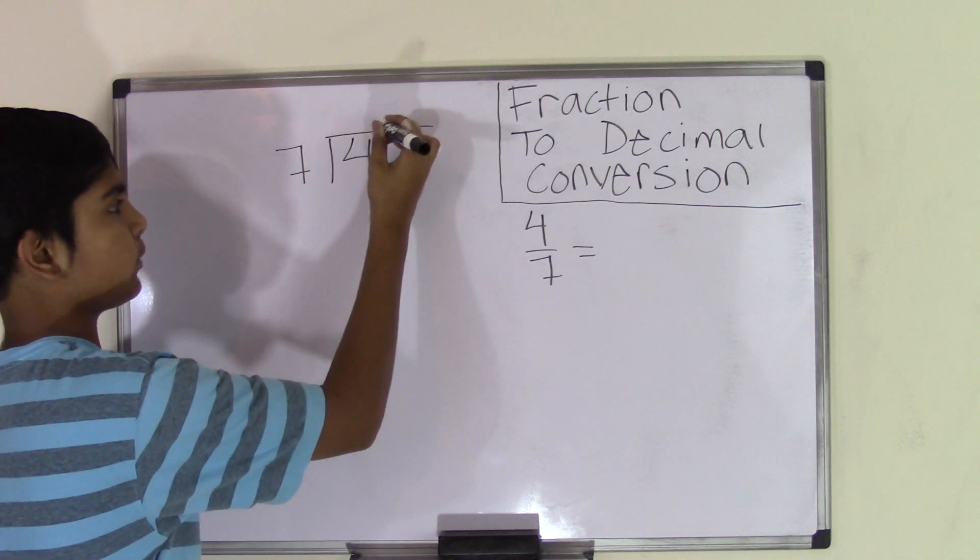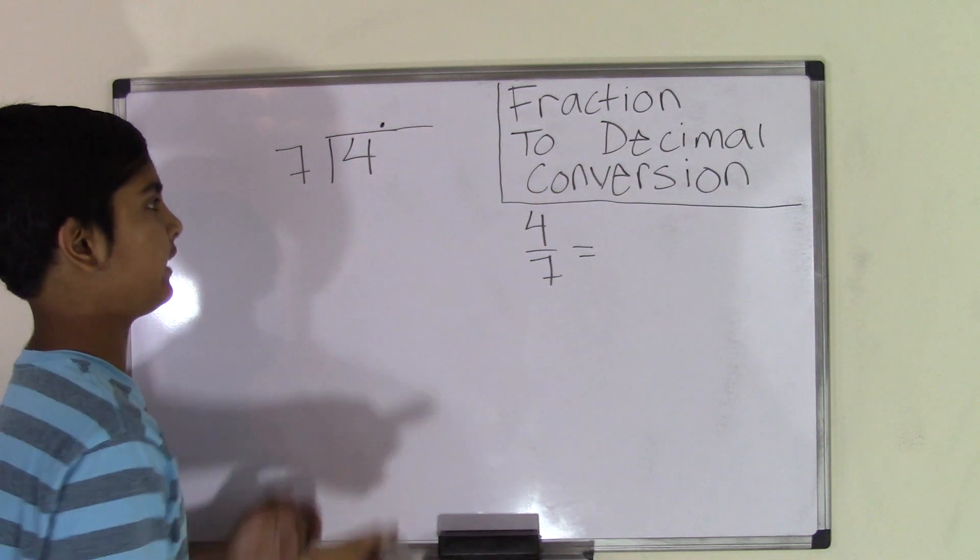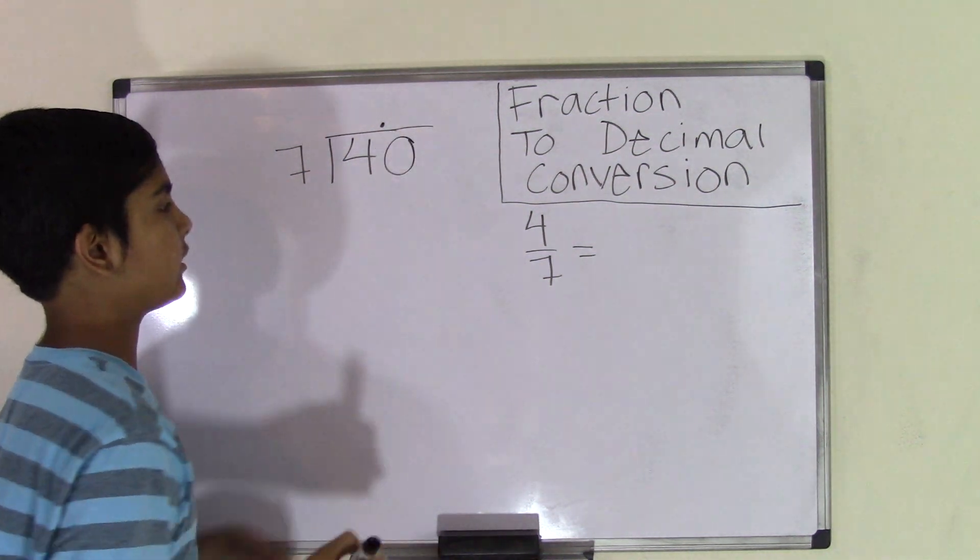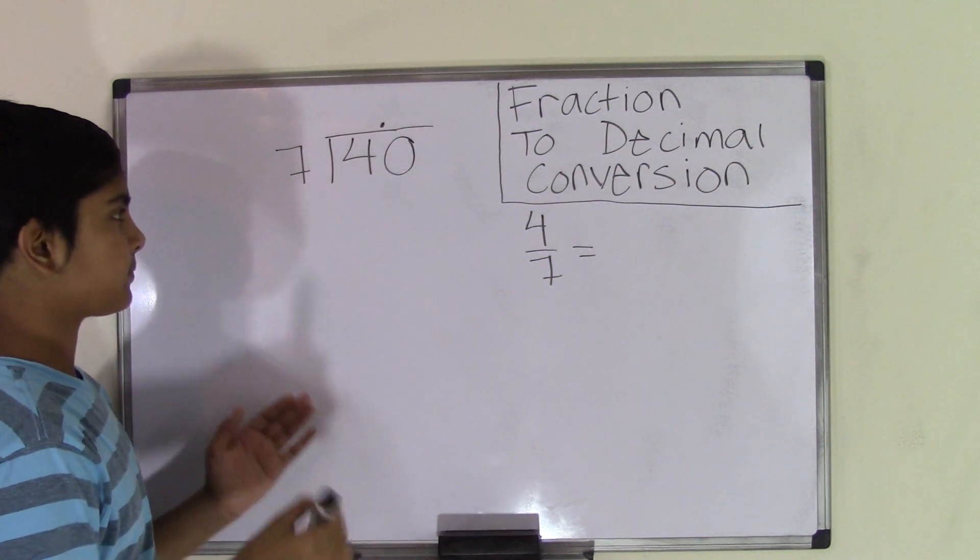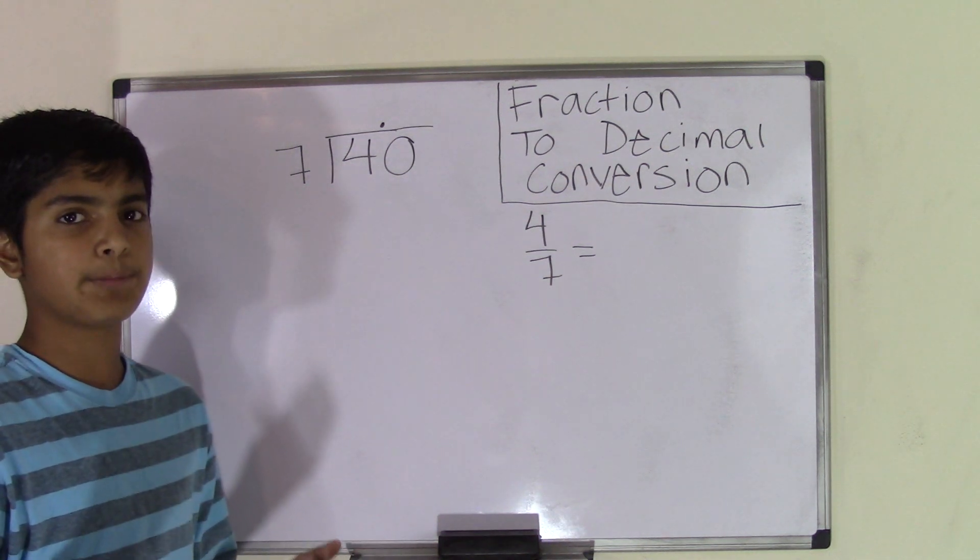So we know that to add the first zero, we need to first add a decimal point to the quotient. So then we add a zero, and we make the number 4 into a number 40. So the number 40 is divisible by 7, but by how many times?